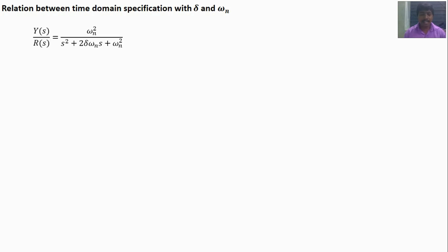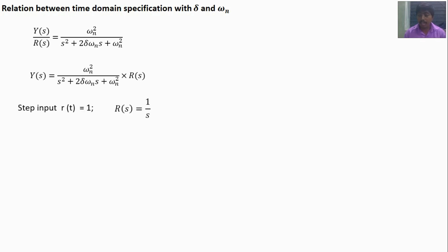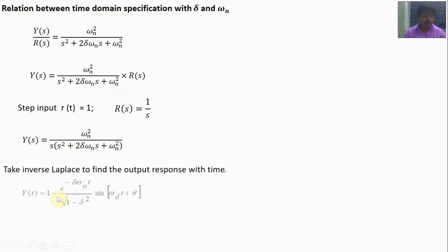We know the standard transfer function Y(s)/R(s). We need to calculate y(t). So Y(s) equals ωn² divided by (s² + 2ζωn·s + ωn²) multiplied by R(s). Since the input is a unit step, r(t) = 1, so R(s) = 1/s. Therefore Y(s) equals ωn² divided by s·(s² + 2ζωn·s + ωn²). Now we take the inverse Laplace transform to find the output with respect to time.